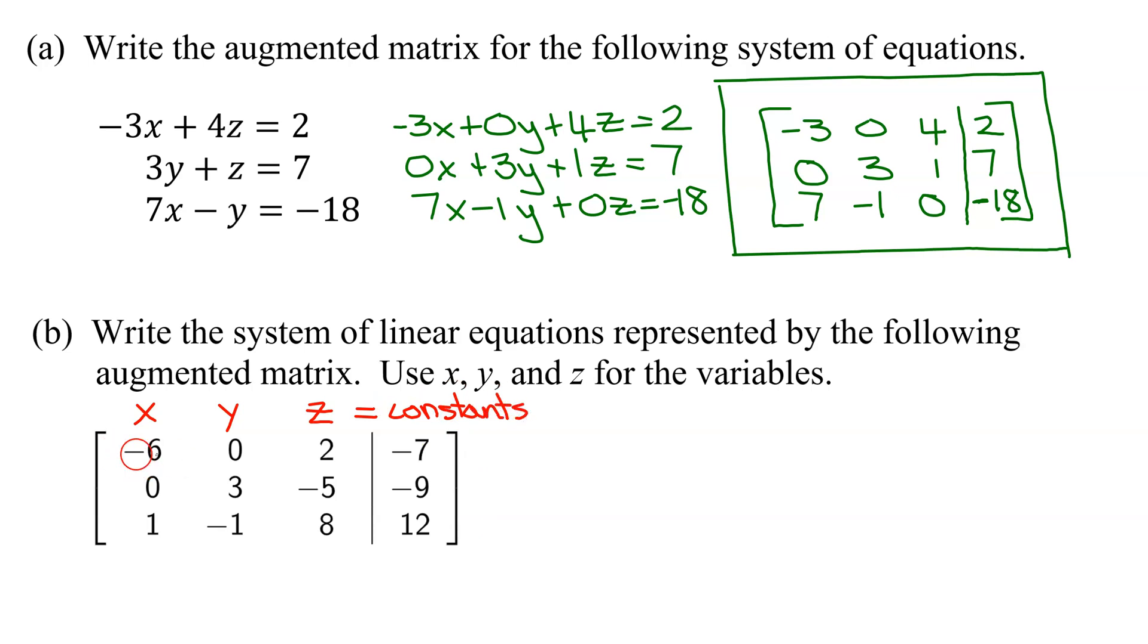So my first row is my first equation. It's going to be negative 6X, no Y's, plus 2Z, equals negative 7.